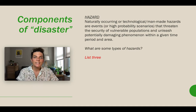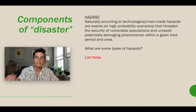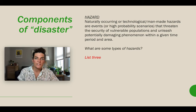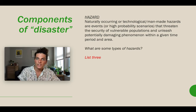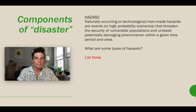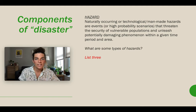Hazards are naturally occurring or technological man-made events or high-probability scenarios that threaten the security of vulnerable populations and unleash potentially damaging phenomena within a given time frame, period, or area. So list three types of hazards you would estimate.